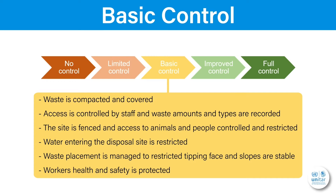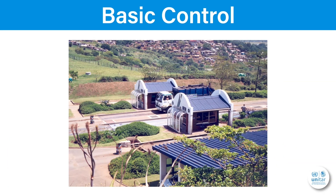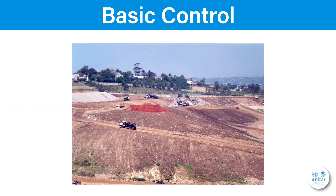Improvements to move from no control to basic control are not necessarily connected to high investments, but typically need a better organized management system. In this case, for instance, we could start by avoiding and extinguishing fires at the site, then install site fencing — or as shown here, a gate to control access with a weighbridge to monitor waste delivery.